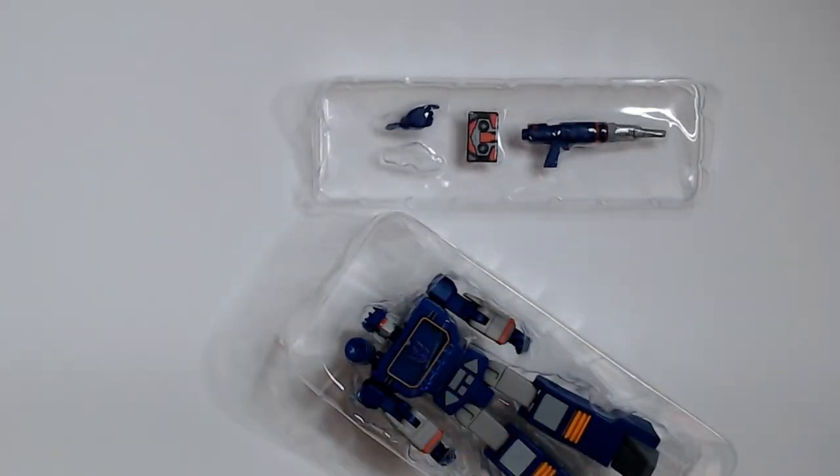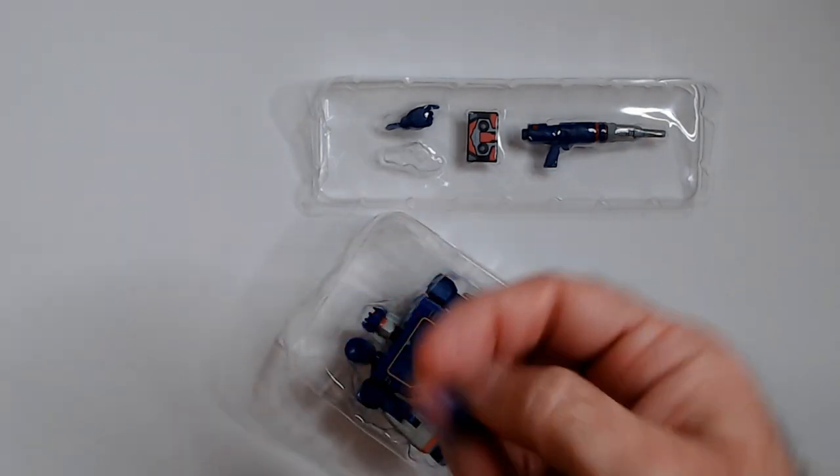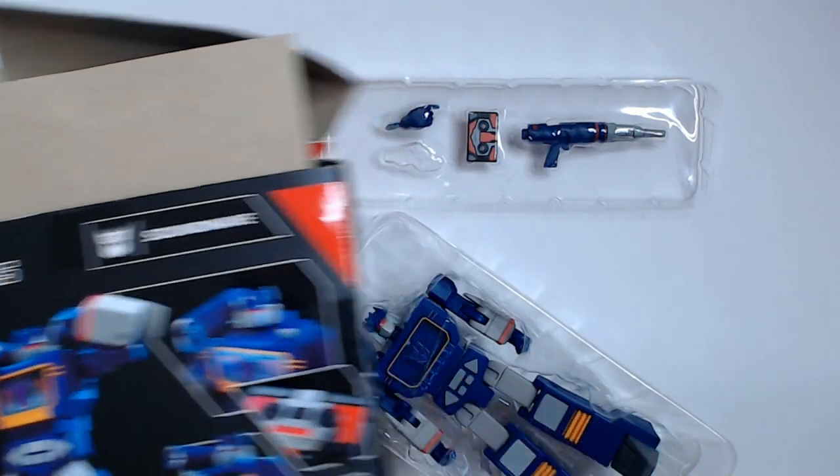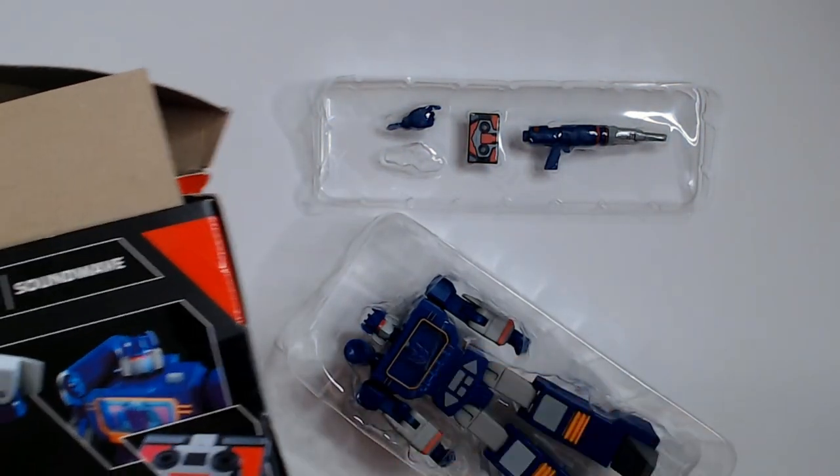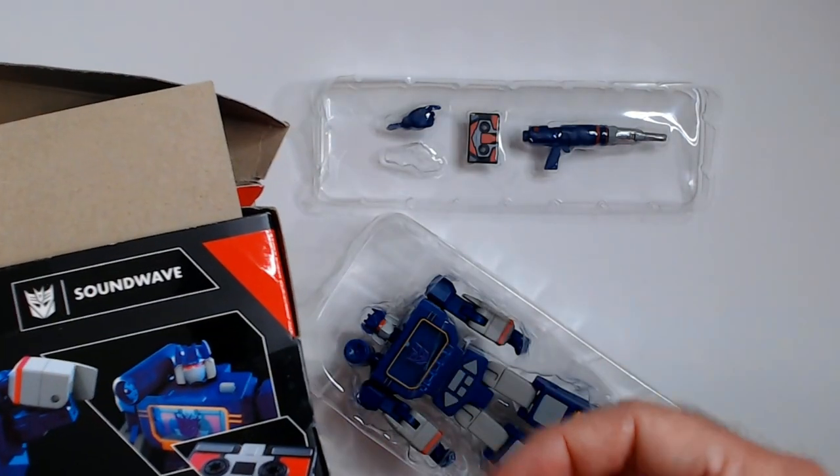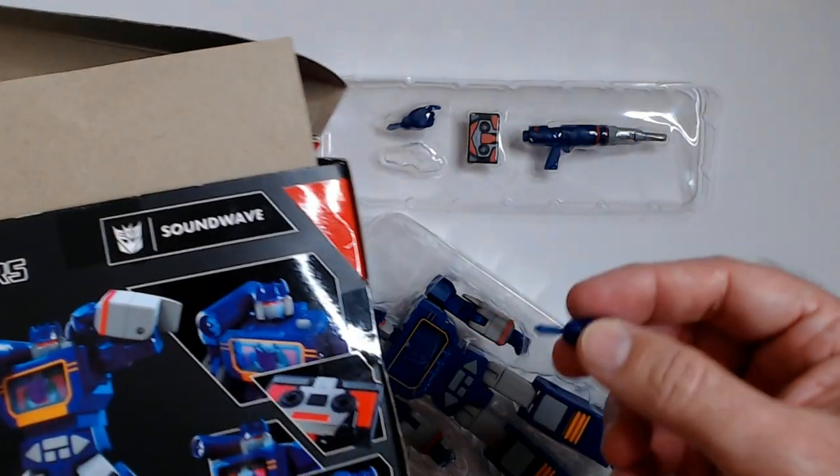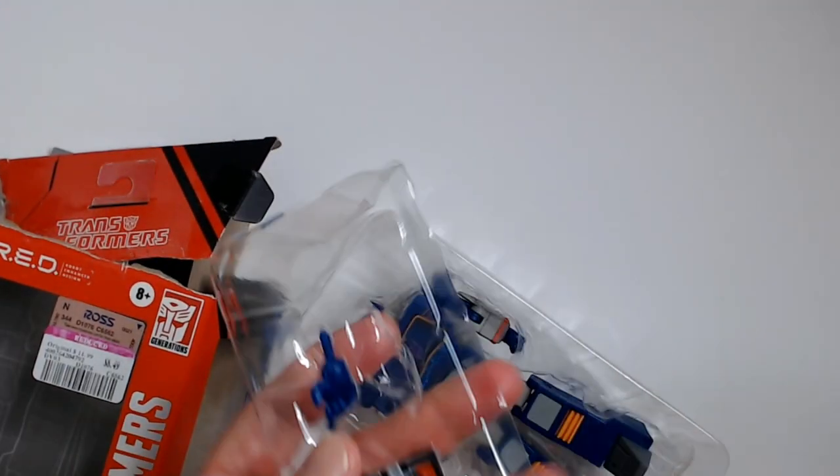Looks like one hand is missing. Nope, nope, it's in the box. I think it's in here. Okay, so let's see. We got the gun, that's good. He has a shoulder cannon, he has that. Doesn't say anything about the two hands, but they're here. So it's complete. That's nice. I'm very happy about that.